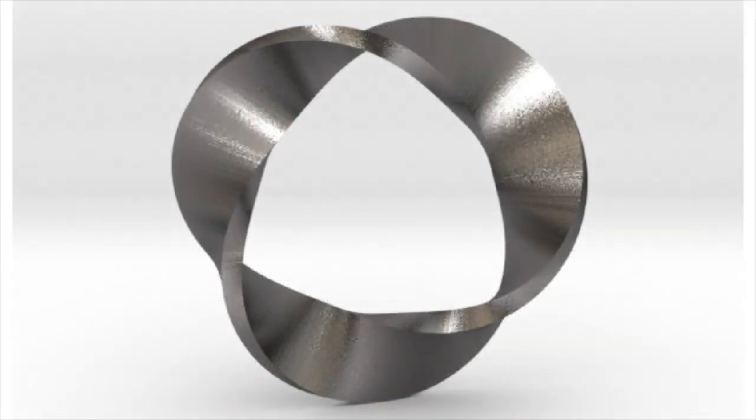However, as is often the case in mathematics, solving one problem opens the door to another. There's no limit, mathematically speaking, to how long a Möbius band can be. But the next problem on Schwartz's agenda is to find the shortest strip of paper that can be used to make a Möbius band with three twists, instead of just one.